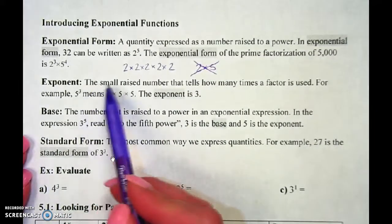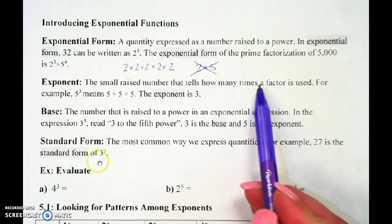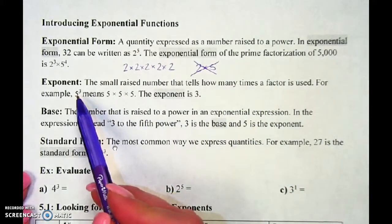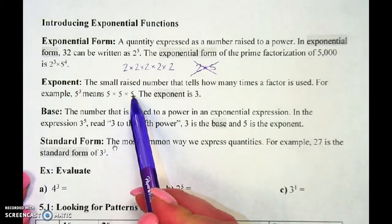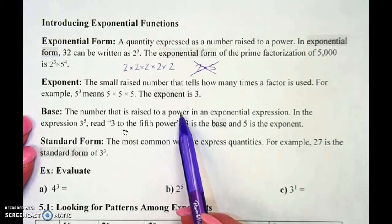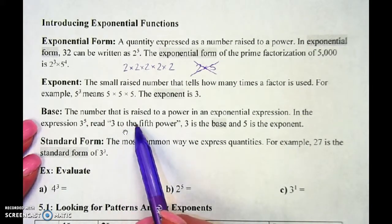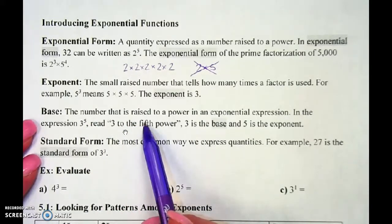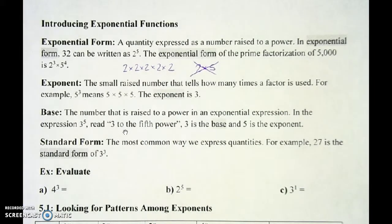The exponent is the small raised number that tells how many times the factor is used. So in 5 to the 3rd, we did 5 three times. The base is the number that's raised to the power. So in 3 to the 5th, the 3 — the big number on the bottom — got multiplied by itself 5 times. So 3 is my base, and my exponent tells me how many times to multiply it.